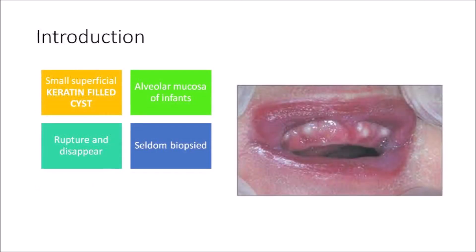The gingival cyst of newborn is a small superficial keratin-filled cyst most commonly seen in the alveolar mucosa of an infant, conventionally in infants younger than three months old. This lesion spontaneously undergoes rupture and disappears by releasing its content into the oral cavity. Being a self-limiting entity, it is seldom biopsied, and since it occurs in individuals younger than three months old, we try not to do any invasive procedure — just a wait and watch approach.